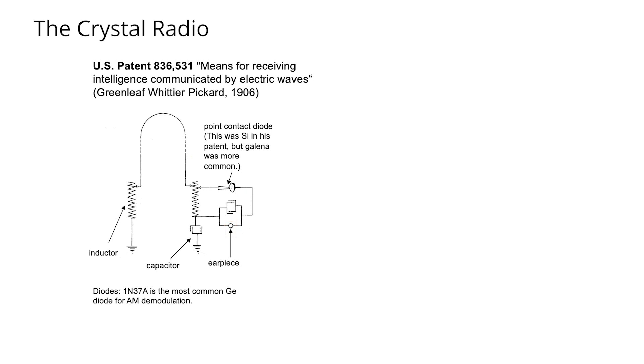So all of the functionality of this crystal radio circuit that was in that original patent is identical to the functionality of the circuit that I've just shown you. The tuning is provided by the capacitor and inductor. The antenna receives the signal. The rock and the point contact demodulate the signal. And then the high-impedance earphones receive it.